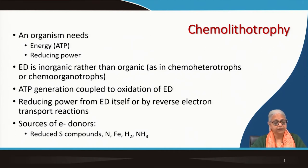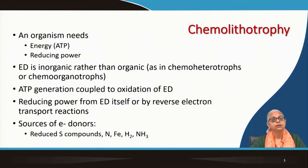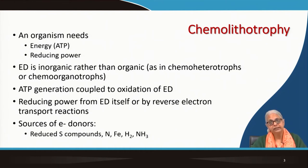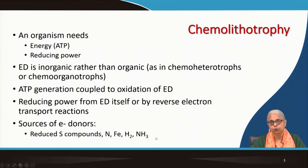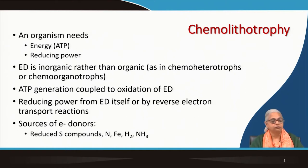Reducing power from the electron donor itself can be utilized or by reverse electron transport reactions. We have seen an example of reverse electron transport reactions in the photosynthetic case. What are the different sources of electron donors that are available? You can have any number of reduced sulfur compounds. Remember that sulfur can exist in several different oxidation states. Sulfate is the most oxidized form. Below that you have thiosulfate, elemental sulfur, sulfide — all reduced sulfur compounds. Similarly, you have reduced nitrogen compounds, ferrous iron, hydrogen and ammonia. These are all reduced forms of inorganic compounds that can serve as electron donors and in the process they will get oxidized.